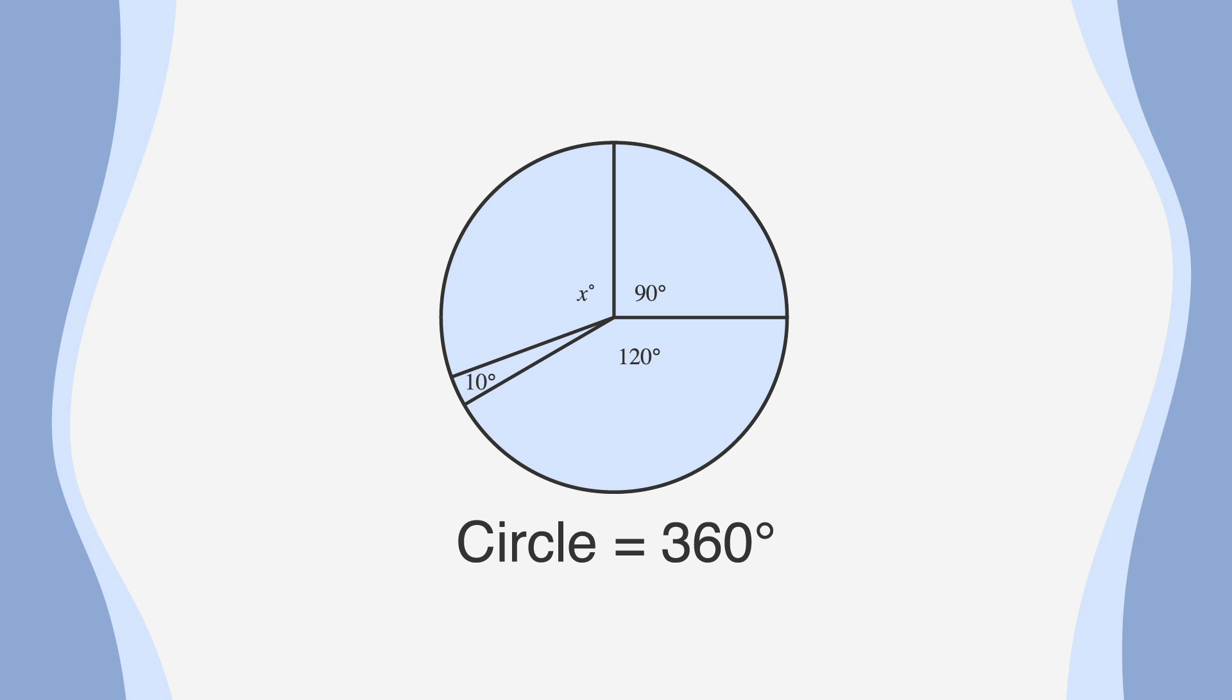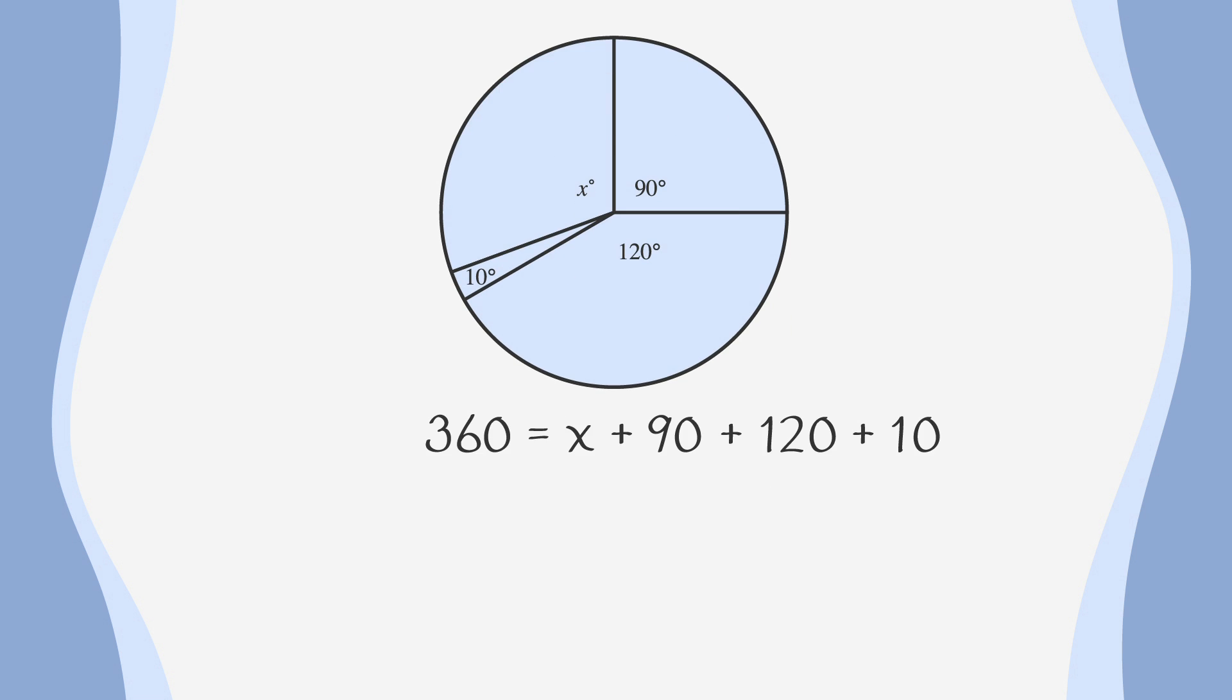Start by setting all angles equaling 360. So, 360 equals x plus 90 plus 120 plus 10. Doing the math, we find 360 equals x plus 220. Subtracting 220 from both sides, we have 140 equals x, which is the measure of our missing angle.